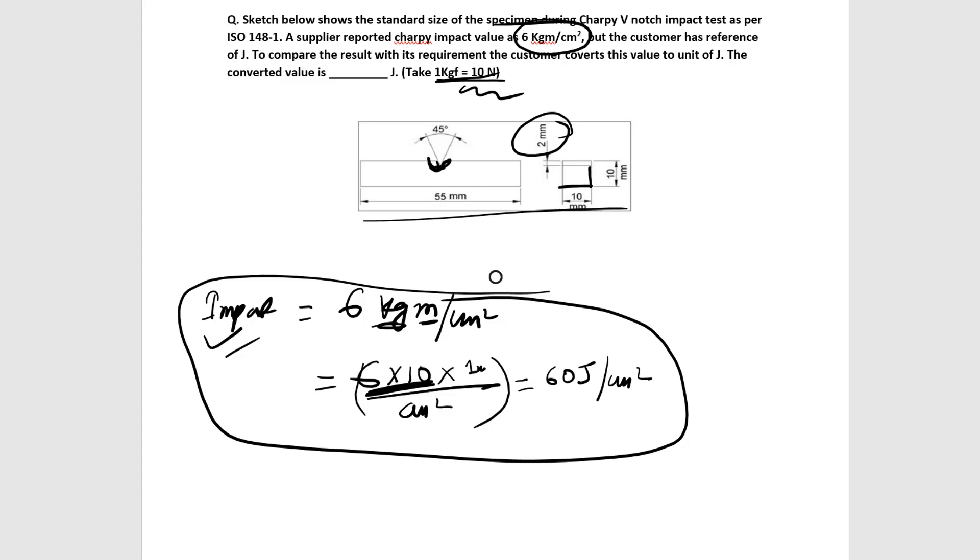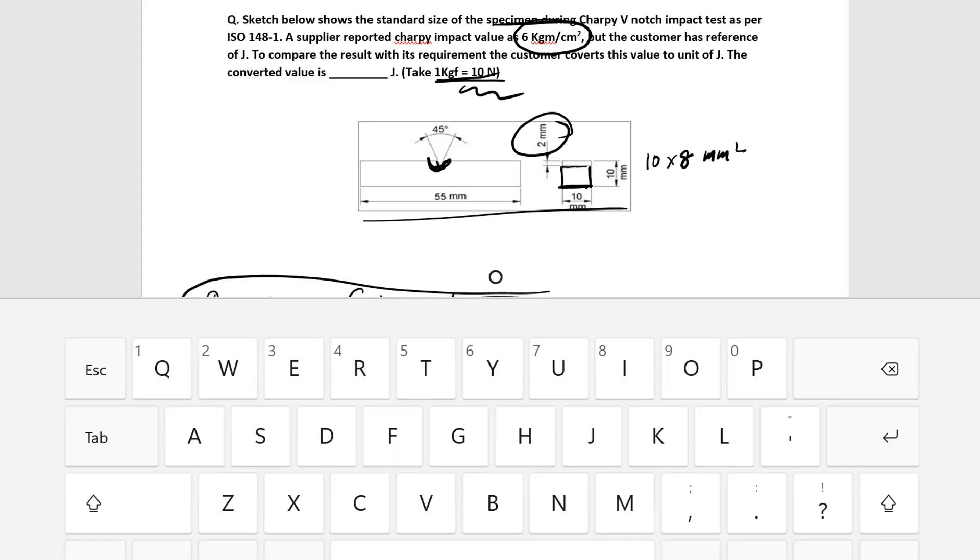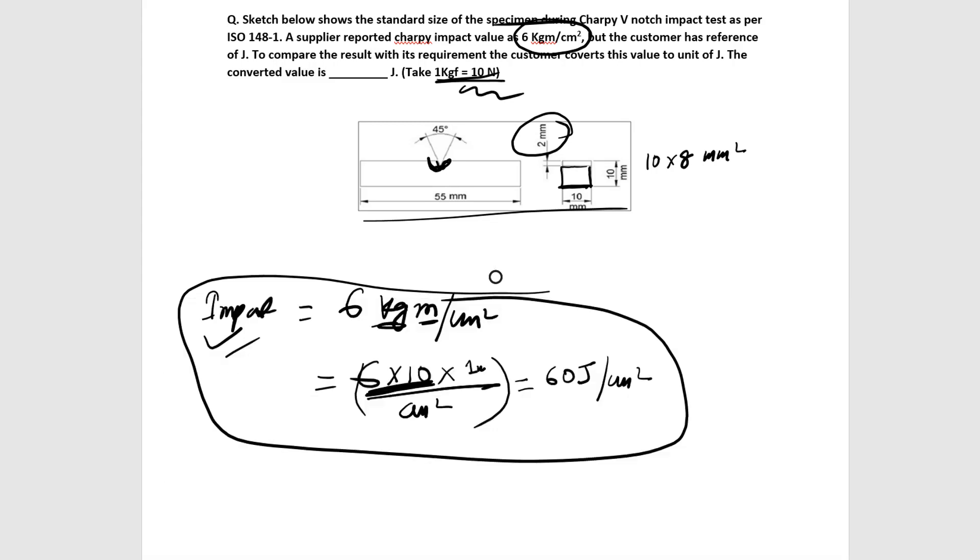Because after the notch there is no any material, in the shape of V we remove the material. So the cross-sectional area will be 10 into 8 mm square.